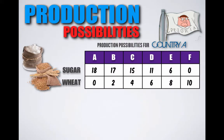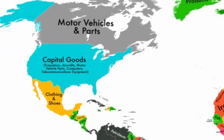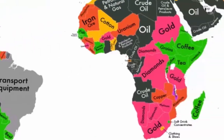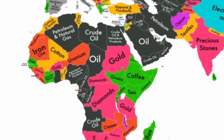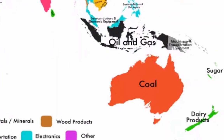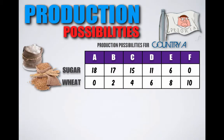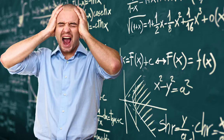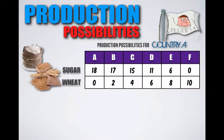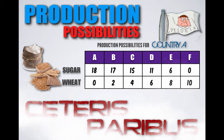Petoria can only produce two goods — sugar and wheat — given the scarce resources available to them. Here's where that simplistic example part comes in. We know in the real world that countries can produce millions of goods and services, but to show the concept of production possibilities and calculate an opportunity cost, we're going to assume that the country of Petoria can only produce two goods. The math could get really crazy with millions of goods. What we know for sure is, given this function, these are the various combinations of sugar and wheat that Petoria can produce, Ceteris Paribus.